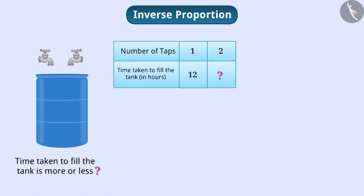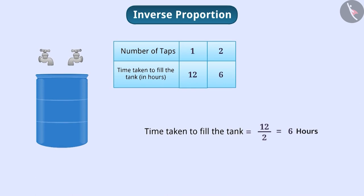Absolutely correct. Putting two taps will fill the tank quickly. That is, it will take less time. Since the number of taps here has doubled, the time will be halved. That is, two taps will fill the tank in 12 divided by 2 which is equal to 6 hours.